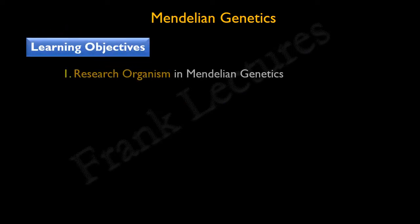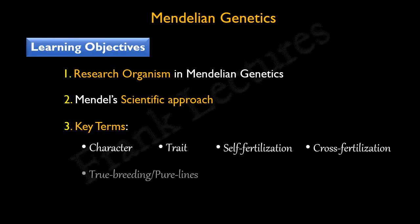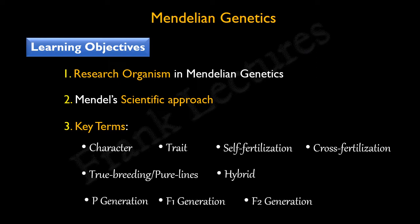In this video lecture, we will discuss the model organism or research organism used in Mendel's experiments, and the scientific approach used by Mendel to understand inheritance. Some of the key terms which we will learn in this lecture are: character, trait, self-fertilization, cross-fertilization, true-breeding or pure lines, hybrid, P generation, F1 generation, and F2 generation. Let's begin.